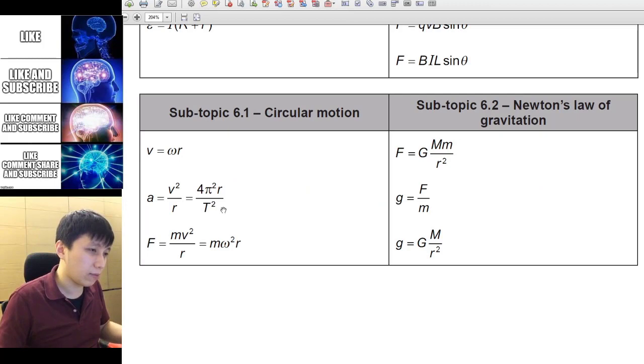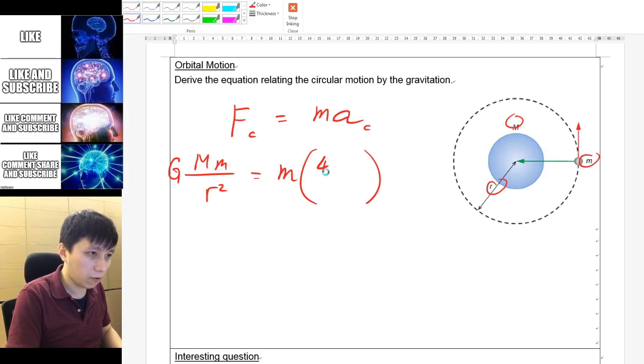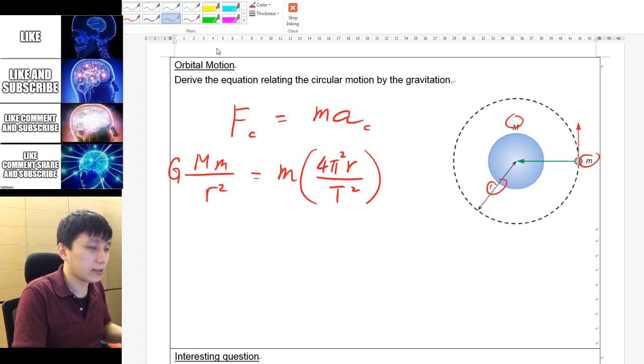And so I think if you have written that, then it's pretty obvious now. The small m will cancel out, and then you would have the r on the same side, so r will be on the same side out to the power 3.